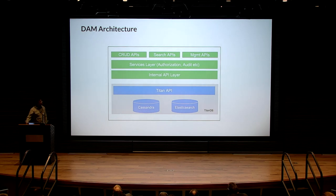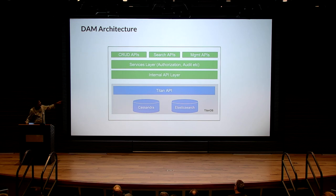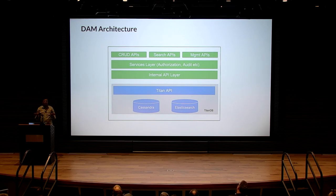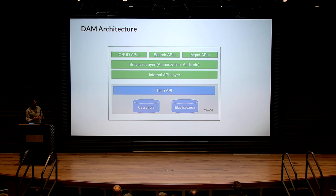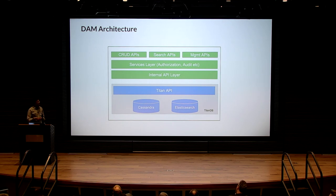Our initial architecture used embedded Titan libraries. We already had hosted solutions for Cassandra and Elasticsearch, so we leveraged those. On top of that we had our internal API converting the vertex-and-edge concept to our own entities and relations, with a service layer hooking into our authorization, marketing, monitoring systems, and other Netflix infrastructure. The top API layer lets you create entities and relations, search APIs let you search any vertex or entity, and management APIs define schema entity types, handle re-indexing and maintenance using the Titan management API.